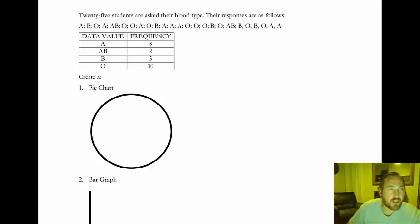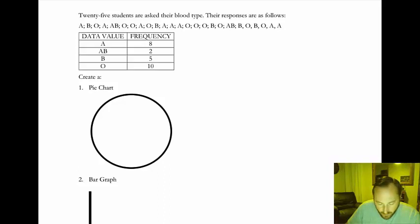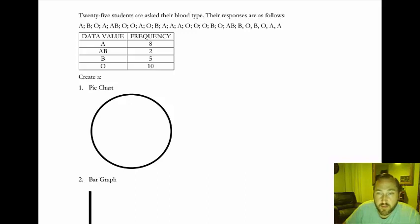Okay, so we're in section 2.2, graphs for qualitative data. In this example it says 25 students are asked their blood type. The responses are as follows.